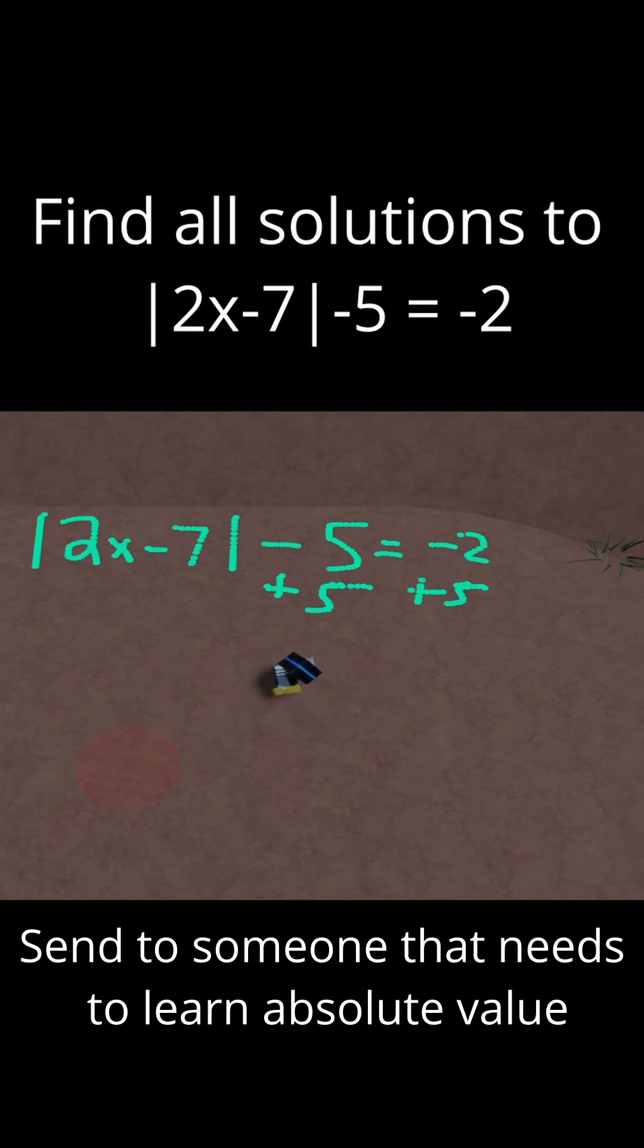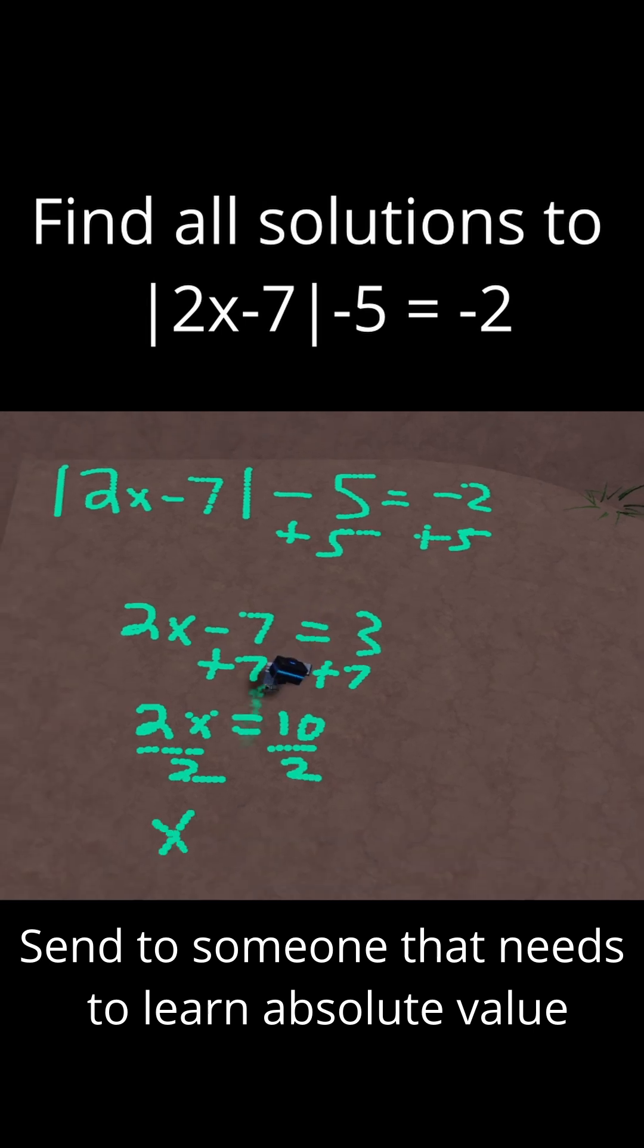So let me do that. First, I'm going to solve 2x minus 7 is equal to positive 3. Add 7 to both sides, and that's 2x equals 10, and then just divide by 2 on both sides. And if you do that, x is equal to 5. So that's one solution.